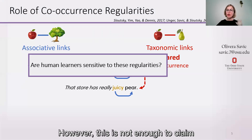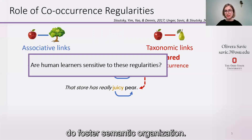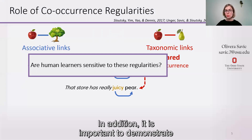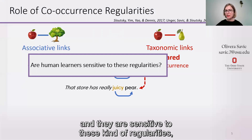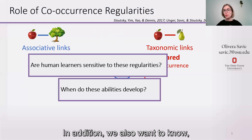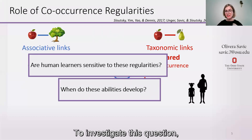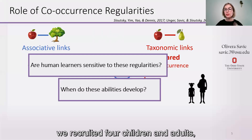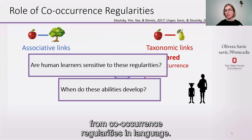However, this is not enough to claim that these regularities do foster semantic organization. It is important to also demonstrate that humans have abilities sensitive to these regularities and that they can learn from them. We also want to know when these abilities to learn from co-occurrence regularities develop. To investigate this question, we recruited four-year-old children and adults and looked at their ability to form novel semantic links from co-occurrence regularities in language.